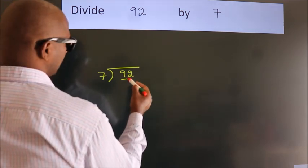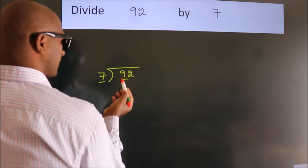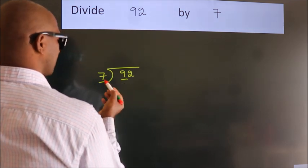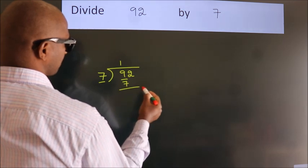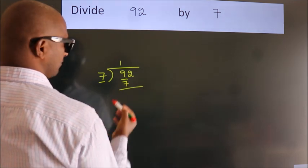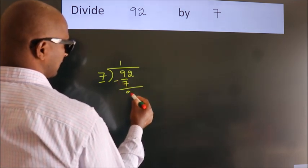Here we have 9. Here 7. A number close to 9 in the 7 table is 7 once, 7. Now we should subtract. We get 2.